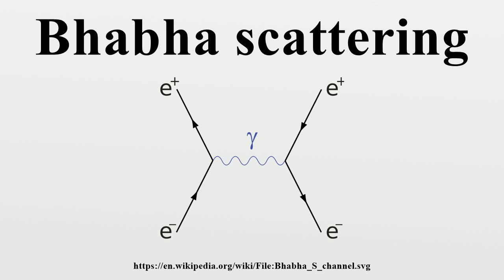Deriving unpolarized cross-section - matrix elements: Both the scattering and annihilation diagrams contribute to the transition matrix element. By letting K and K' represent the four momentum of the positron,